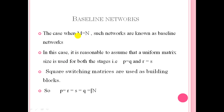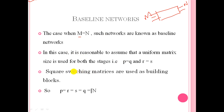So what are baseline networks? If somebody asks, a baseline network is the case when m is equal to n — that is, when the number of inlets equals the number of outlets. In this case it is reasonable to assume that a uniform matrix size is used for both stages, meaning square matrices are used as building blocks for both the first and second stage.